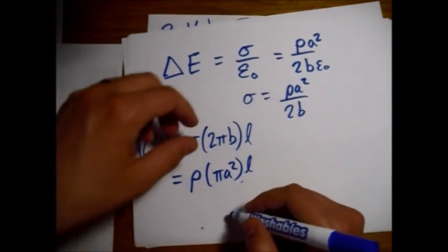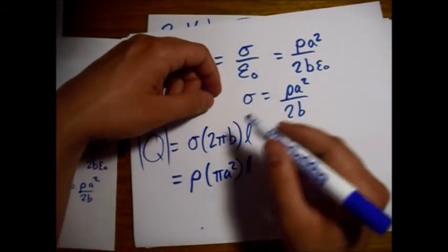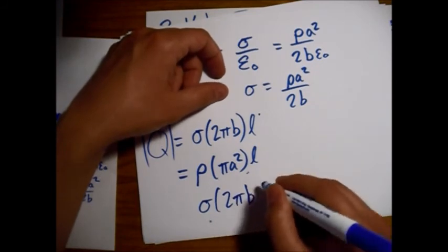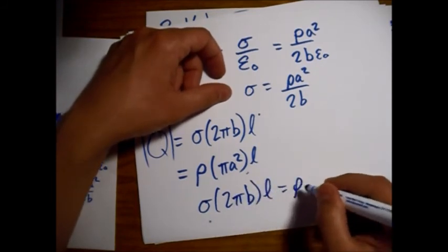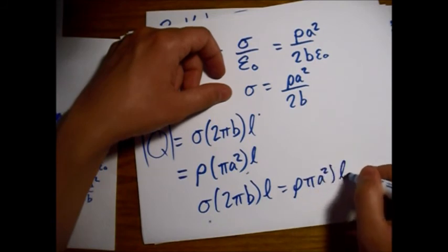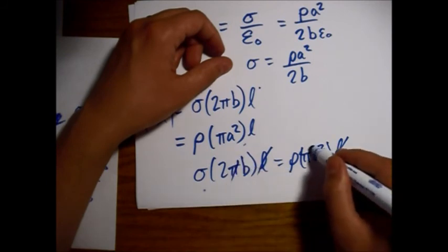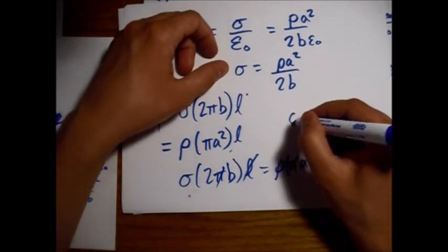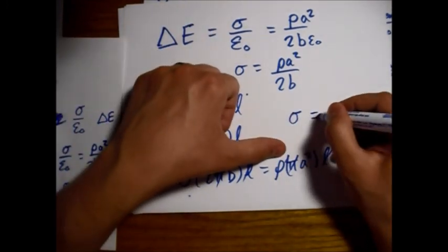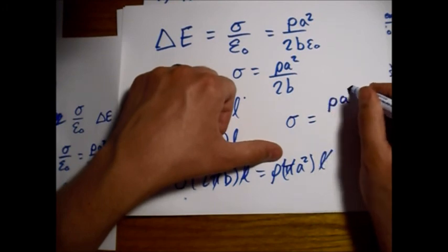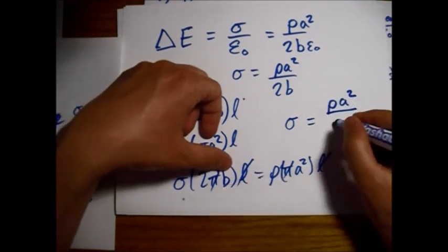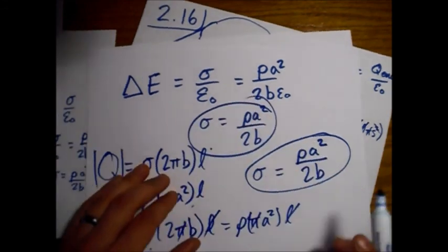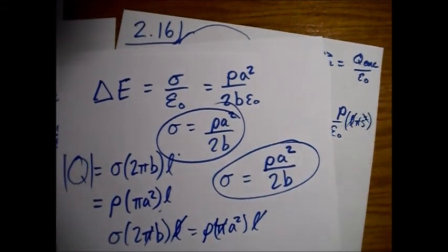Opposite in sign but equal in magnitude is the charge on the inner cylinder, which is rho times pi A squared multiplied by L. Here we have the volume of the inner cylinder multiplied by the volume density. The L's will cancel out, the pi's will cancel out. And we are left with sigma, and on the other side we have a rho A squared, dividing by 2B on both sides. So we'll see this matches this, and we end up with the same answer either way we look at it.